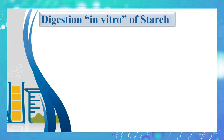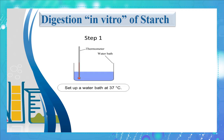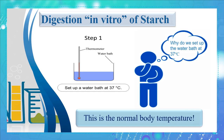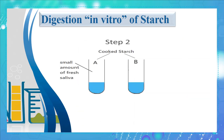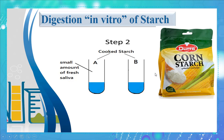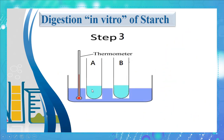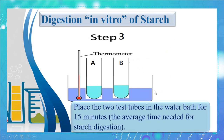To set up an in vitro experiment, first prepare a water bath at 37 degrees Celsius — because it is the normal temperature of the human body. In the second step, prepare two test tubes and label them A and B. Put cooked starch in both of them and add a small amount of fresh saliva in tube A only. Finally, place the two test tubes in the water bath for 15 minutes, which is the average time needed for starch digestion.